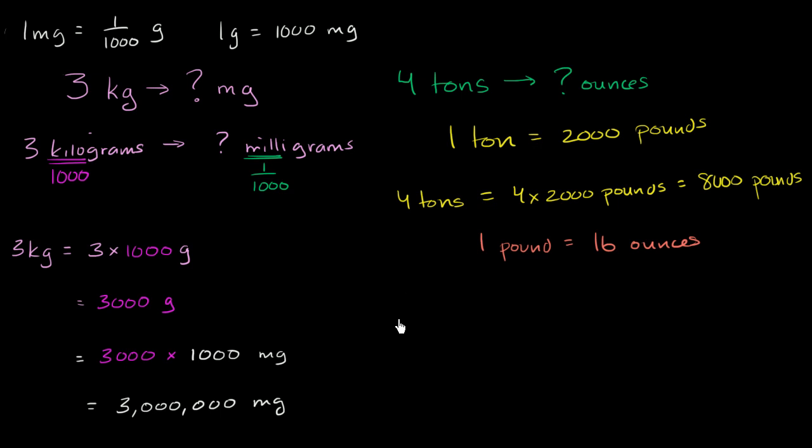So 8,000 pounds, if each of those 8,000 has 16 ounces, or equivalent to 16 ounces, this is going to be 8,000 times 16 ounces.